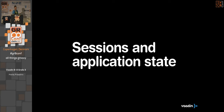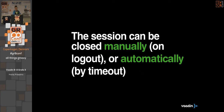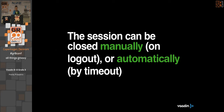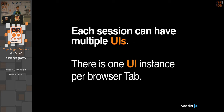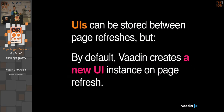How it works: it all works by keeping the session and application state on the server side. A Vaadin application is tied to an HTTP session, which can be manually closed when the user logs out or timed out by the server. Each session can have multiple UIs — UI is the root of your component hierarchy in Vaadin, like JFrame in Swing. One UI instance is always tied to one browser tab. By default, when the user refreshes the page, Vaadin will create a new UI instance.